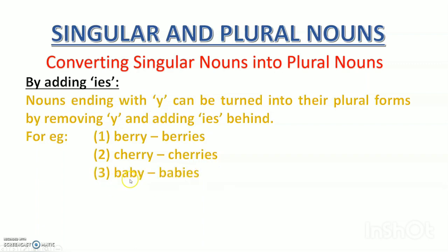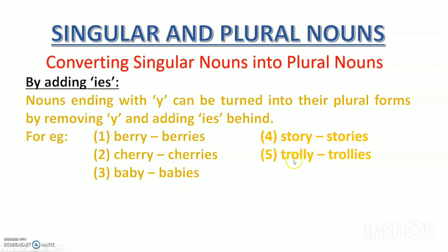Baby — ek chotta bachcha; if there are many, babies. Y has been replaced with IES. Story — ek kahani; you've heard many stories. Once again, Y is replaced by IES. And trolley — agar ek trolley hai, one trolley; if there are many, trolleys — in place of Y, IES. I hope these examples are clear. In all these examples, Y has been replaced by IES to get the plural form.